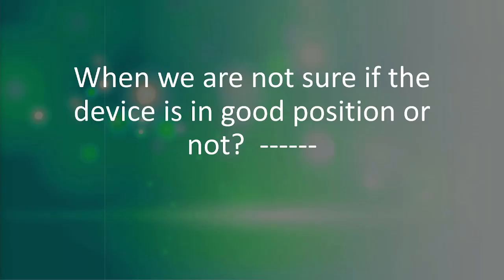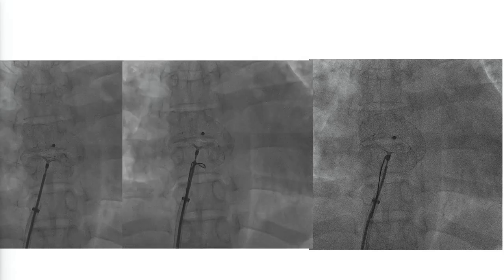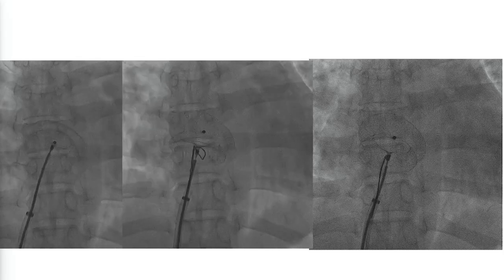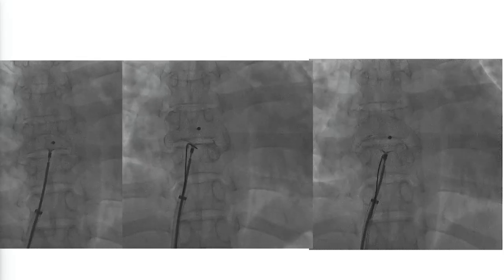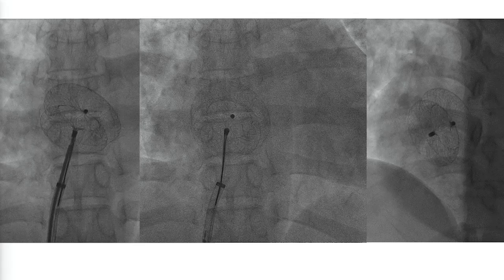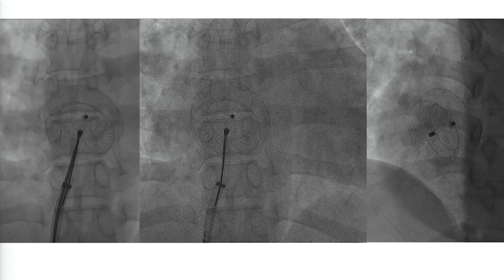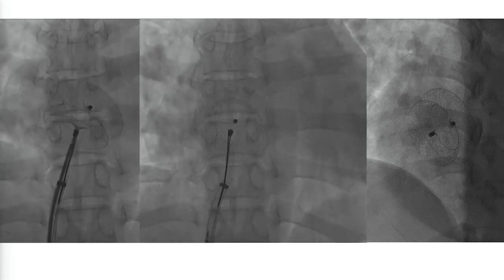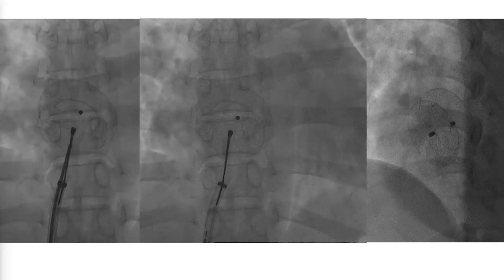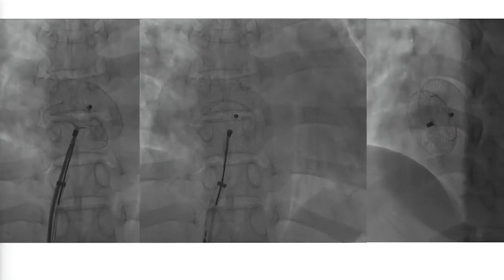When we are not sure that we are in good position, what to do next? In this case, we are not sure that we are catching all the rims. Then we took the snare, we cast the device with the snare, and here we release the device, catching the device with the snare. The device is good in position, so we release it. We can use this snare technique in difficult cases.